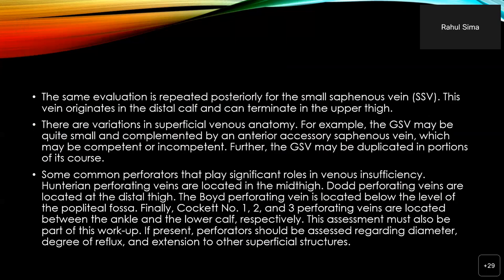The same evaluation is repeated posteriorly for the small saphenous vein, which originates in the distal calf and can terminate anywhere from the popliteal fossa to the upper thigh. There are variations in superficial venous anatomy; for example, the GSV may be duplicated or complemented by an anterior accessory vein. Some common perforators that play significant roles include the Hunterian perforator in the mid-thigh, the Dodd perforator in the distal thigh, the Boyd perforating vein below the knee or popliteal fossa, and the Cockett perforators above the ankle. Perforators should be assessed for diameter, degree of reflux, and extension to other superficial structures. A cut-off of 0.35 seconds is used for perforator reflux.